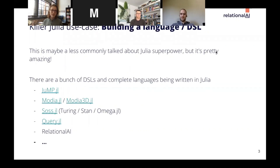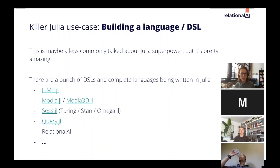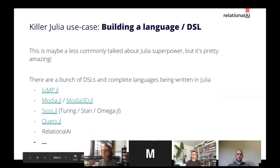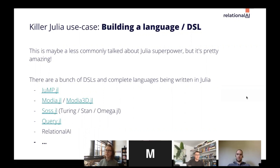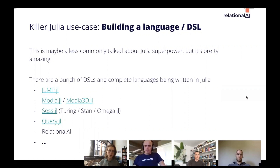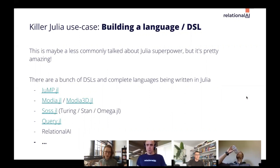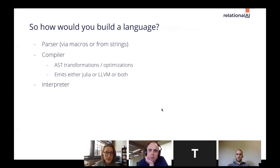I want to talk about a killer Julia use case that maybe doesn't get a lot of attention — building your own language or a DSL with Julia. Julia makes it very tempting to write a domain-specific language with its easy expression manipulation and first-class runtime compilation. If you write a DSL, your users' code in your language is just as much normal Julia as normal Julia, so you can write complex abstractions that have no runtime cost.